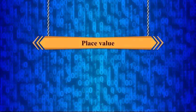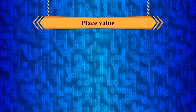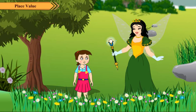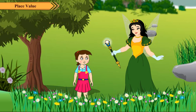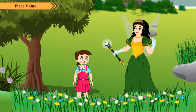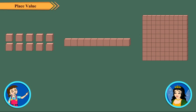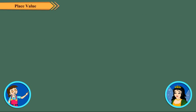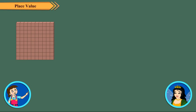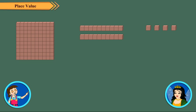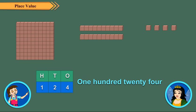Place value. Do you know, Neha, we can also represent three-digit numbers using blocks, strips, and grids. Here we have 100, 2 tens and 4 ones. So the number is 124.